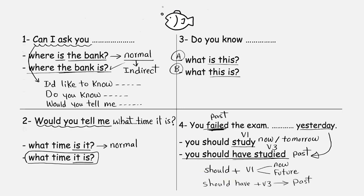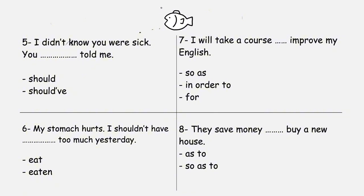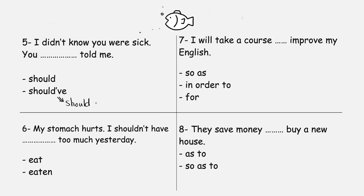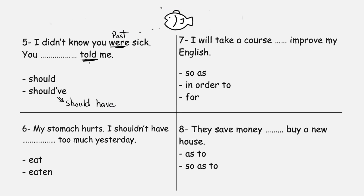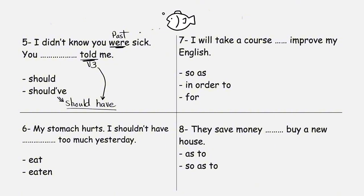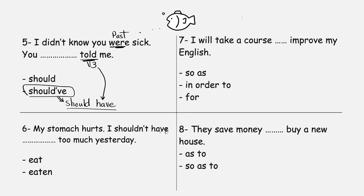So the rule is: 'should + verb 1' is used for now and the future; 'should have + verb 3' is used for the past. 'I didn't know you were sick — you blank told me.' The answer is 'you should have told me.' 'Should've' is the contraction of 'should have,' which we use in the past. Here we have 'were' in the past, and 'told' is verb 3 of 'tell' — verb 3 comes with 'should have.'